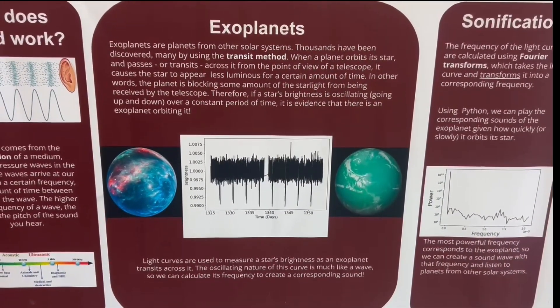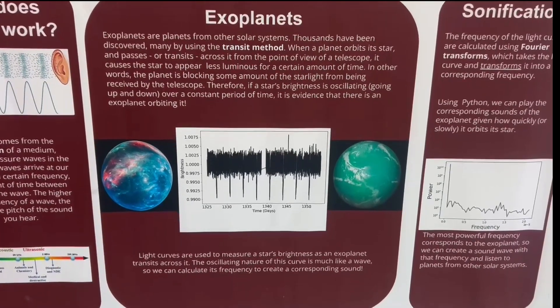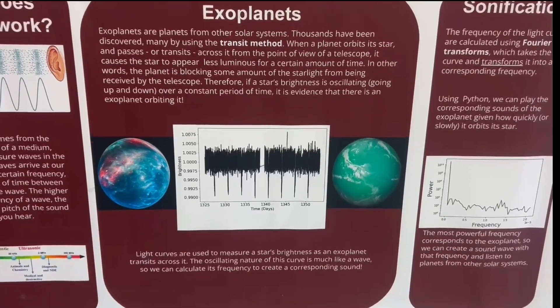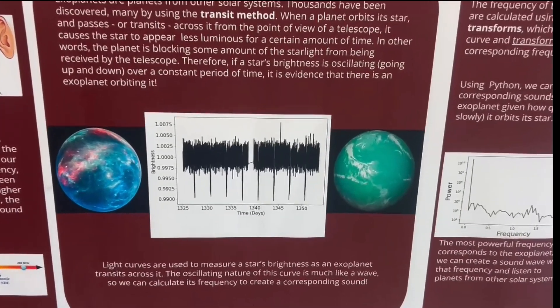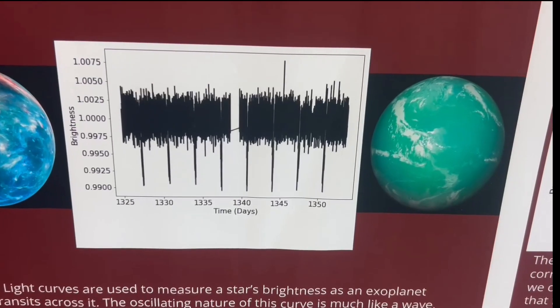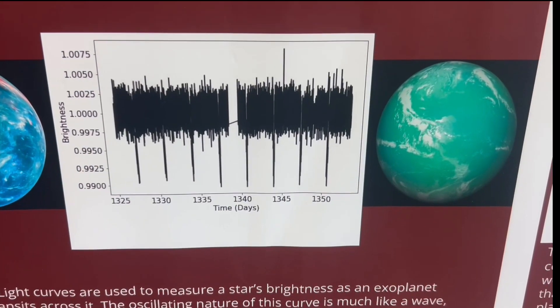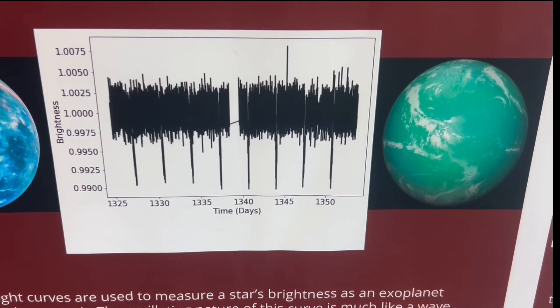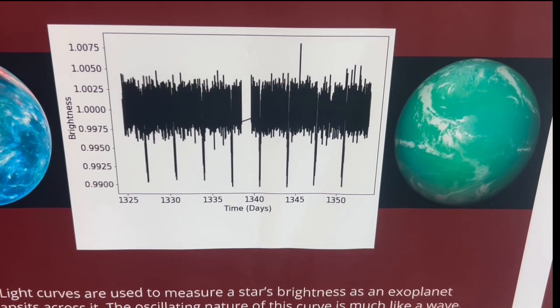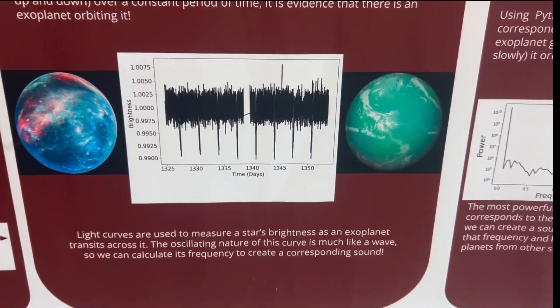A transit can be seen by observing how bright a star is, and if an exoplanet is orbiting the star, there will be a dip in the light curve when the exoplanet passes between us and the star, as we can see here down below.